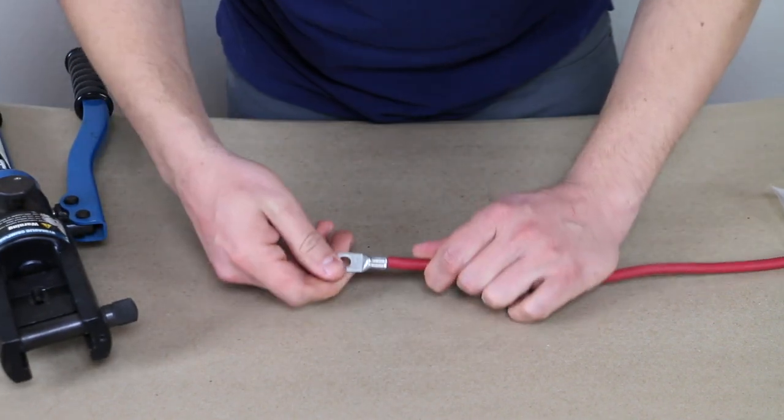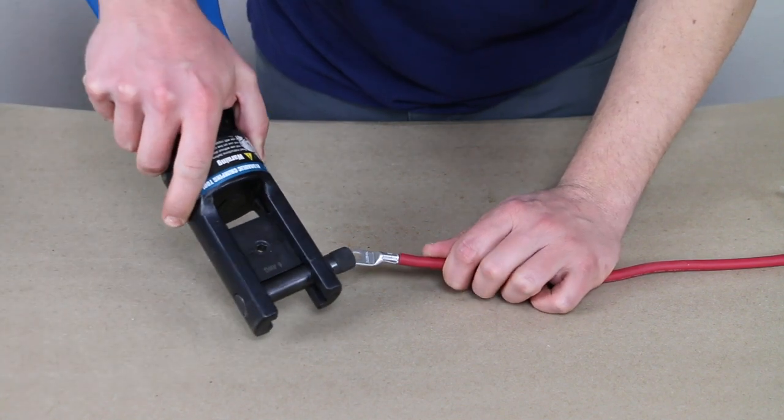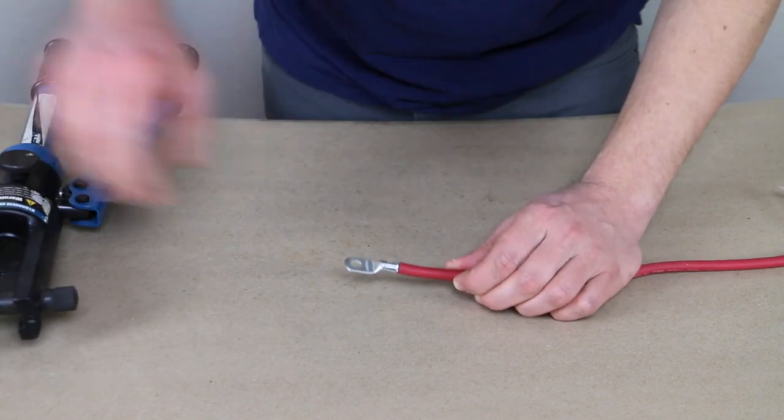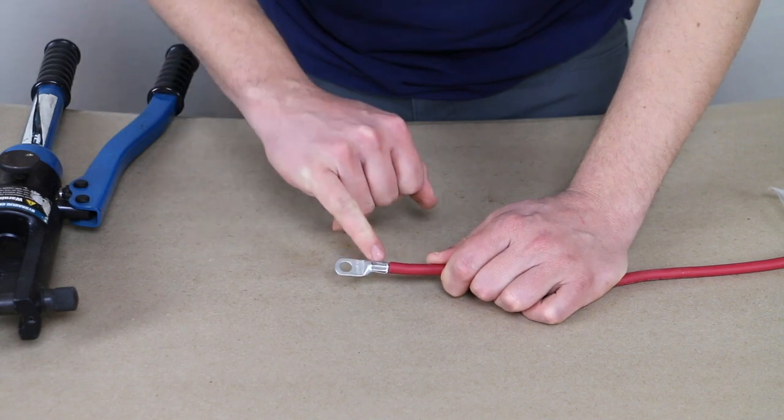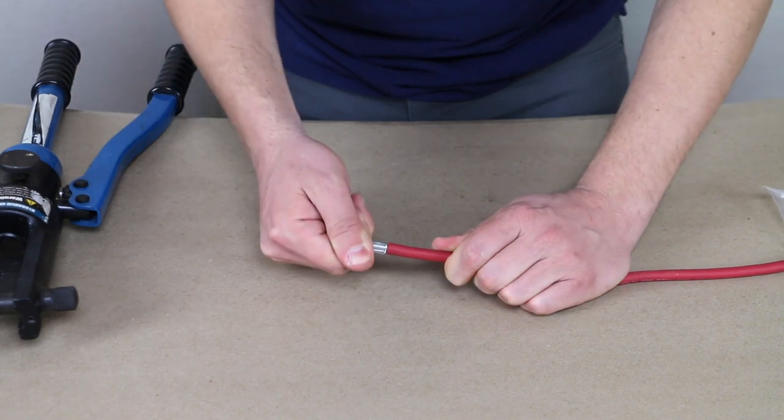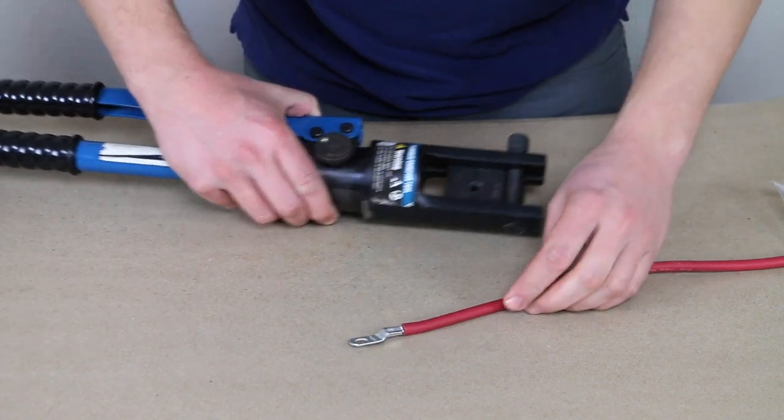So, pretty good crimp there. This is the actual six-gauge dies. So I didn't have to change sizes. We've got an excellent crimp. The metal didn't squish out too much. Overall, a great crimp. And the Temco definitely delivers.